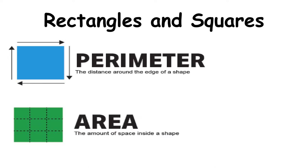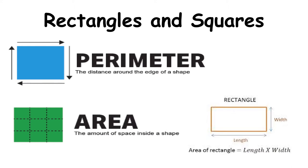Let's first look at rectangles and squares. The two main measurements are perimeter and area. The perimeter is the outside of the shape — we add all sides together. Area is the amount of space inside the shape, calculated by multiplying length by width. With a square the length and width are the same, but the formula is still the same.